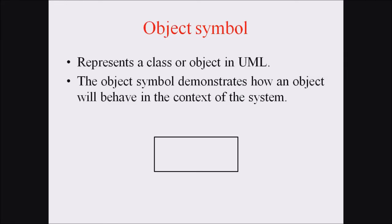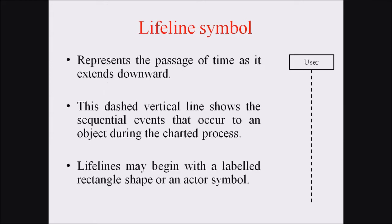The second symbol is the object. The object symbol represents a class or object in UML. It demonstrates how an object will behave in the context of the system, and it is represented by a rectangular box with the object name.